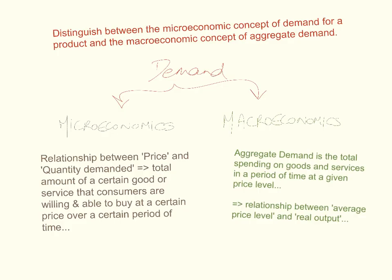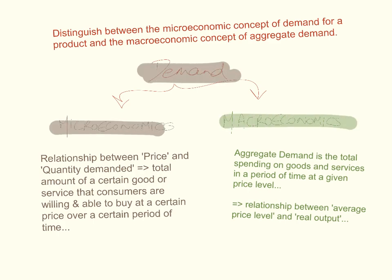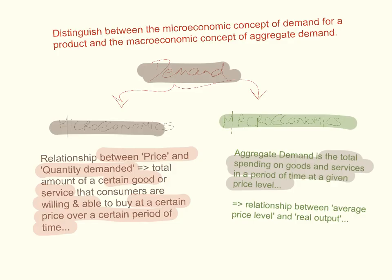The first outcome is to distinguish between the microeconomic concept of demand, which we've covered in microeconomics, and the macroeconomic concept of Aggregate Demand. In microeconomics, demand is a relationship between price and quantity demanded — the total amount of a certain good or service that consumers are willing and able to buy at a certain price over a certain period of time. In macroeconomics, however, Aggregate Demand is defined differently: it is the total spending on all goods and services in a period of time at a given price level. The relationship here is between average price level on the y-axis and real output or real GDP on the x-axis.